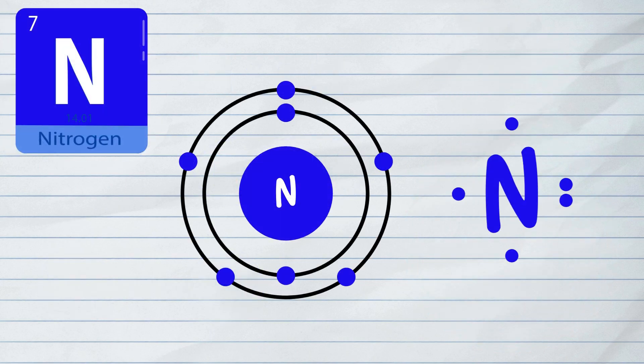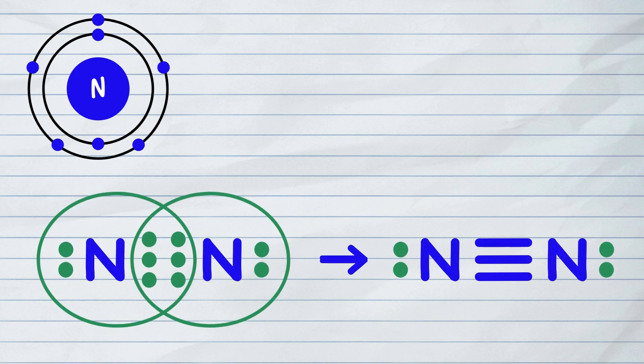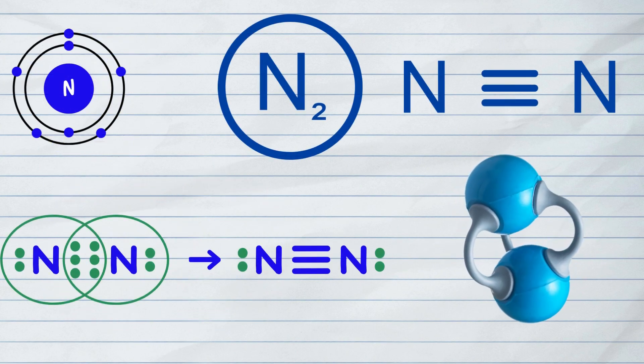Nitrogen has five valence electrons, so two nitrogen atoms will share three of their five valence electrons to form a triple covalent bond, thus forming a stable N2 molecule.